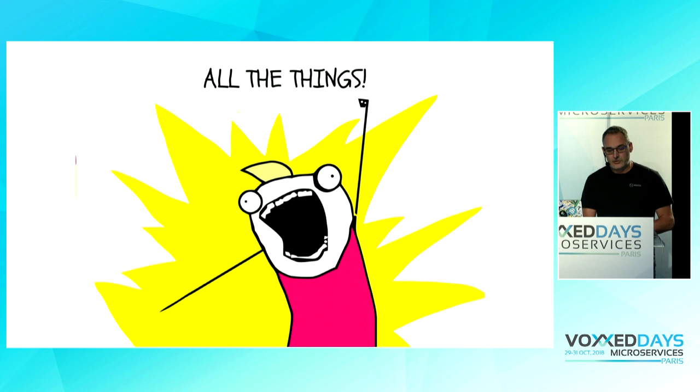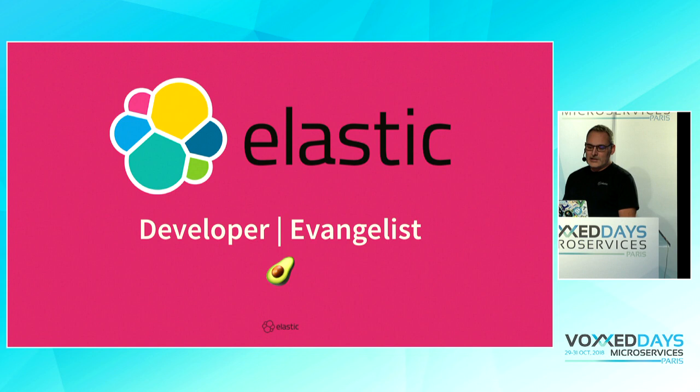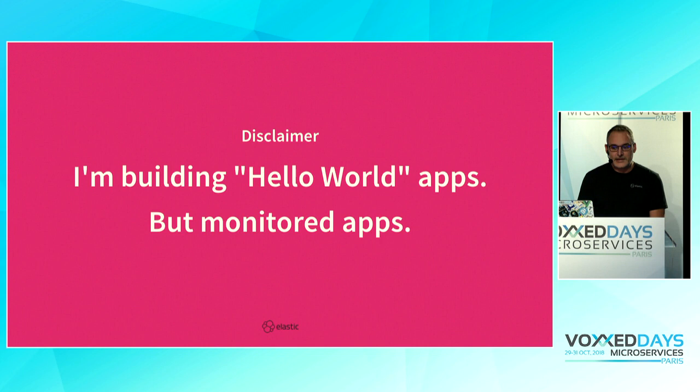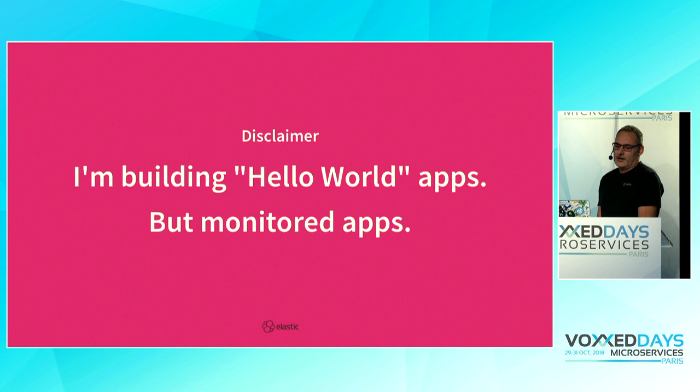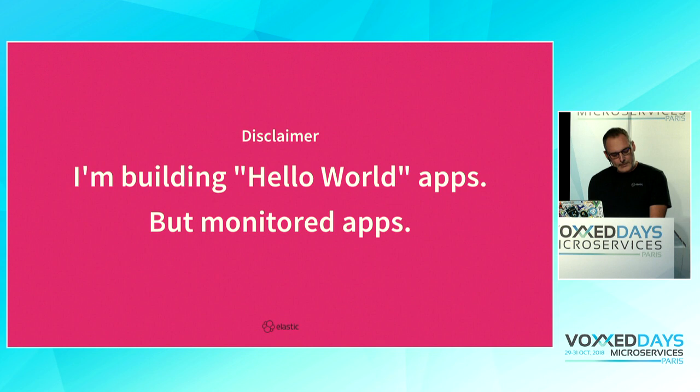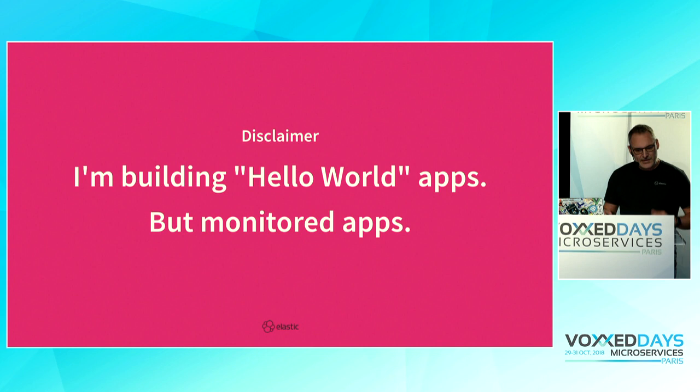I'm a developer and evangelist — more evangelist now at Elastic. What does that mean? It means I'm building Hello World applications. But when we run demos like this, we try to make it appear like it's in the real world, like in production. So when we designed this application, for example, we were using HTTPS to make sure it behaves like it would behave in production.